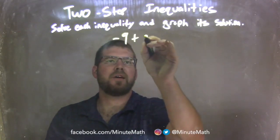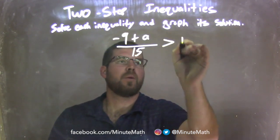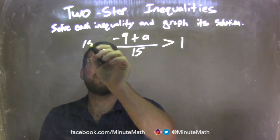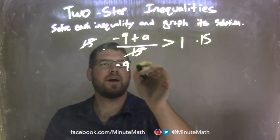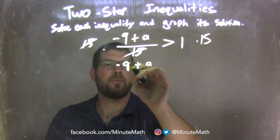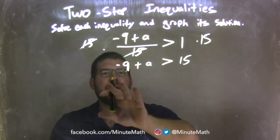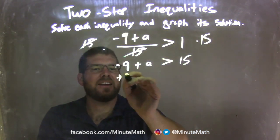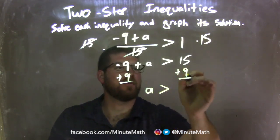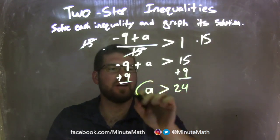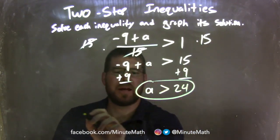Negative 9 plus a, all over 15, is greater than 1. First step: multiply both sides by 15. That eliminates the 15, giving me negative 9 plus a on the left, and 1 times 15 which is 15 on the right. I then need to add 9 to both sides, leaving me with a is greater than 15 plus 9, which is 24. A is isolated. If a is greater than 24, now we need to graph it.